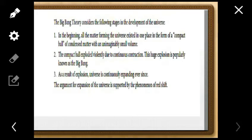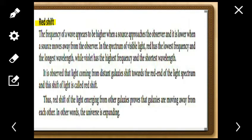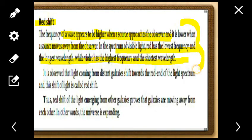Redshift is a very important concept. The frequency of a wave appears higher when the source approaches the observer, and lower when the source moves away. In the spectrum of visible light, red has the lowest frequency and longest wavelength, while violet has the highest frequency and shortest wavelength. It was observed that light coming from distant galaxies shifts toward the red end of the spectrum — this shift is called redshift.